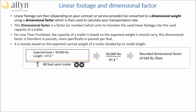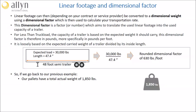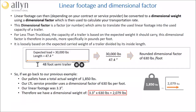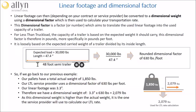Based on these numbers, you could expect a dimensional factor of 630 pounds per foot. Going back to our previous example, the pallets have a total actual weight of 1,850 pounds. Our provider uses a dimensional factor of 630 pounds per foot, and as our linear footage was 3.3 feet, we simply calculate the dimensional weight by multiplying 3.3 by 630, which gives us 2,079 pounds of dimensional weight. As this dimensional weight is higher than the actual weight, it is the dimensional weight that the service provider will use to calculate our LTL rate.